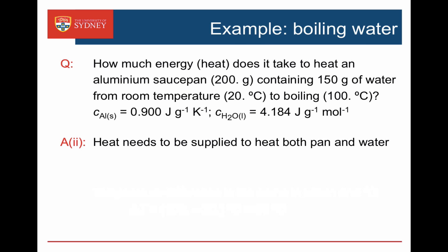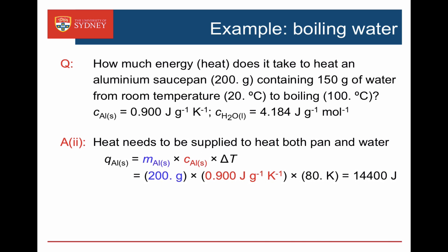We need to calculate the heat required to heat both the pan and the water separately. For the aluminium: 200 grams multiplied by 0.9 joules per gram per Kelvin multiplied by 80 Kelvin gives 14,400 joules. We can verify the units: grams cancel with grams⁻¹, Kelvins cancel with Kelvins⁻¹, leaving joules — the correct unit for heat energy.